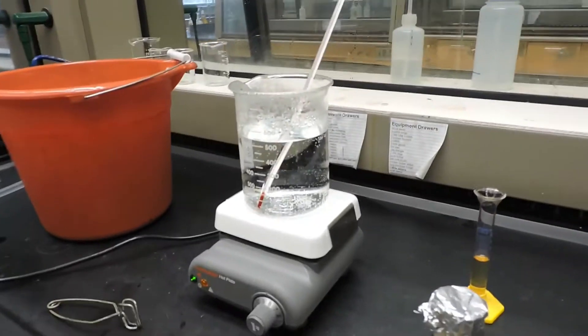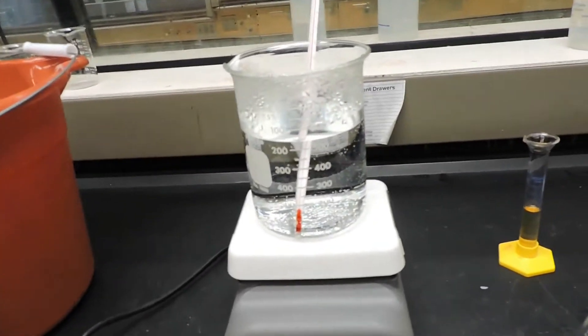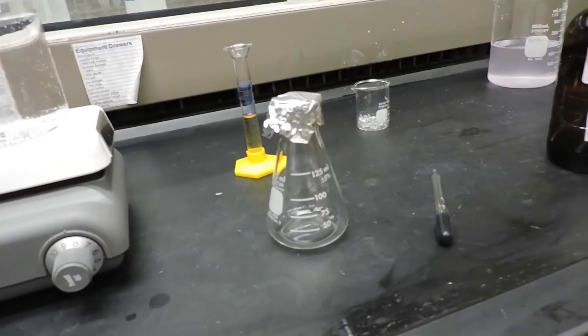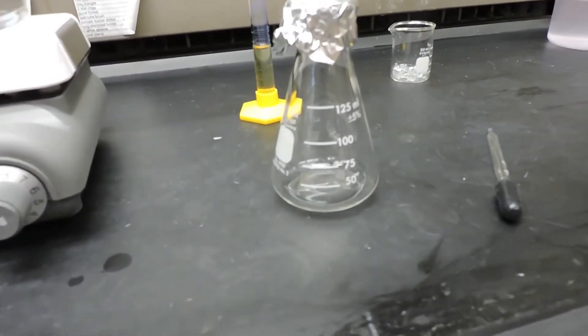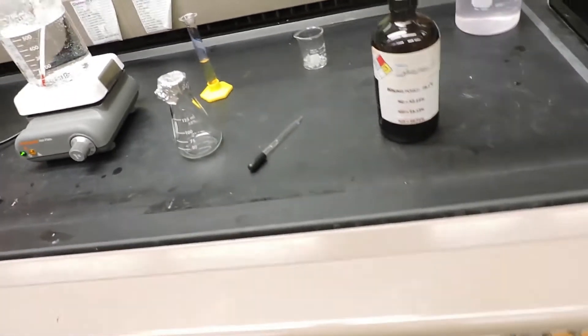Here we have a large beaker with around 550 milliliters of water heated up to approximately 90 degrees Celsius. We also have a 125 milliliter Erlenmeyer flask covered with a square piece of aluminum foil, and later we'll poke a hole in the top using one of these pens.